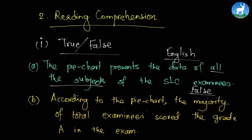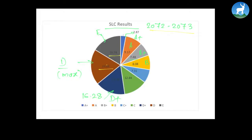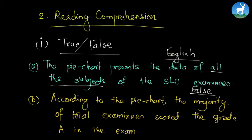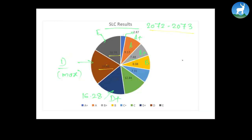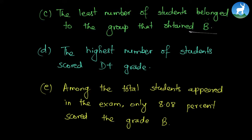The next statement is: 'According to the pie chart, the majority of total examinees scored grade A in the exam.' Going back to the pie chart, the maximum percentage of people scored D, not A — so that is false. The third statement is: 'The least number of students belong to the group that obtained B.' The least number of students actually scored A+, not B — so that is also false.